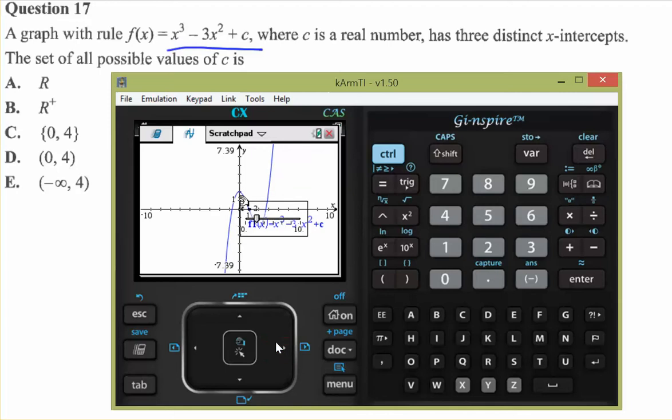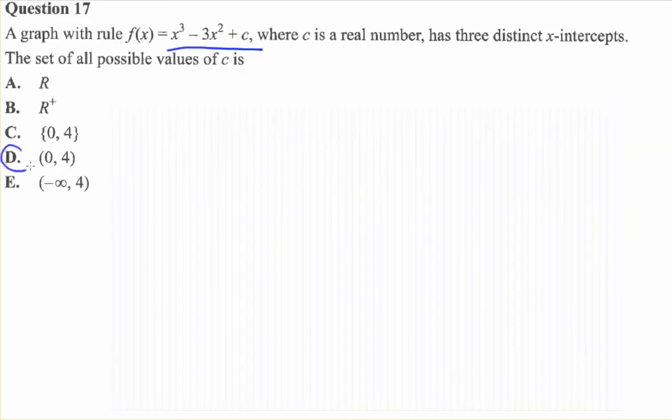So just by playing with sliders, you should be able to see that the answer must be this interval d, because we're not including 0 and 4, because 0 and 4 have two x-intercepts, and we're including everything in between. So the answer there is d.